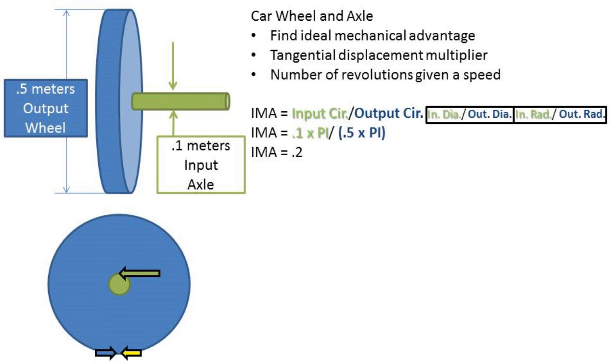So after we plug our answers into the mechanical advantage formula of input over output, we get a mechanical advantage of 0.2. This means that the force on the outside edge of the wheel will be one-fifth of the force at the outside edge of the axle.